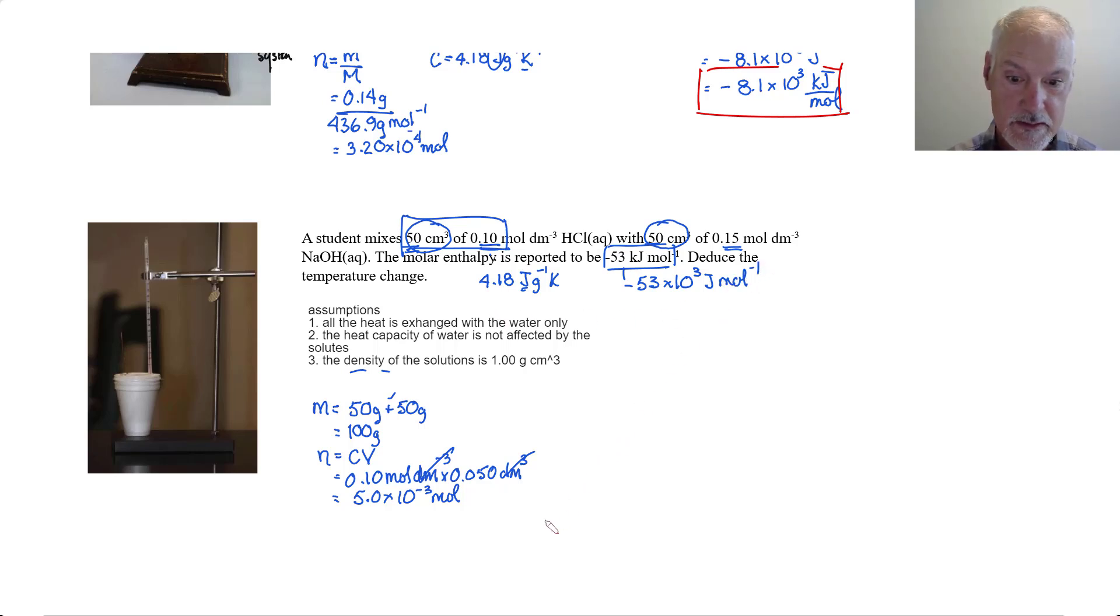So I have everything now in the appropriate units so let's go back to our equation. N delta H is minus M C delta T. We need delta T by itself so that would then give us that the temperature change would be the same as N delta H negative and M C.